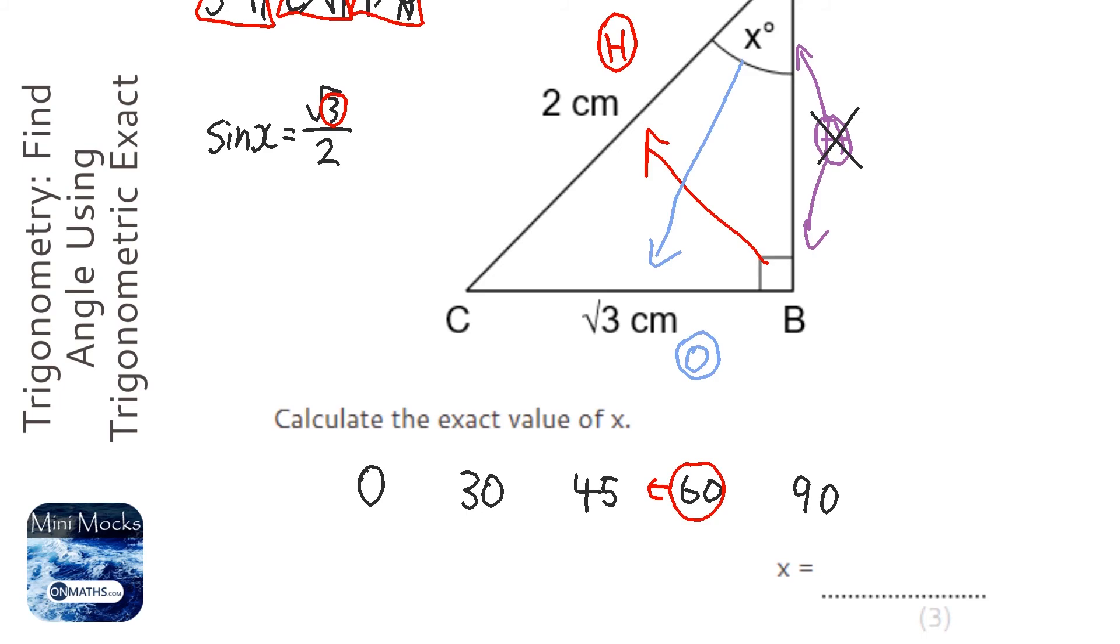So my answer is going to be x equals 60. And once you're revising, you can always verify by typing in sine 60. And when you type that in, you'll find the answer of root 3 over 2 before you convert it to a decimal.